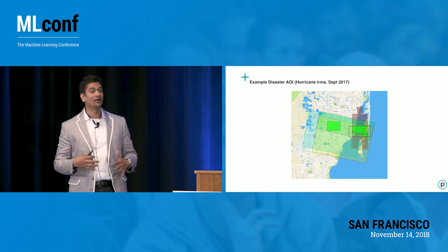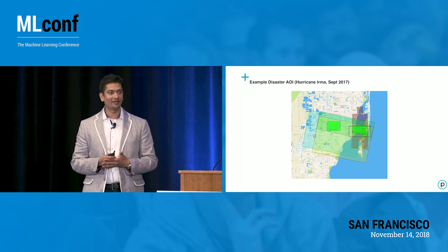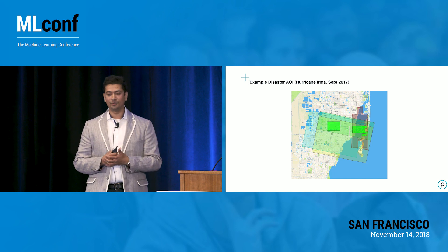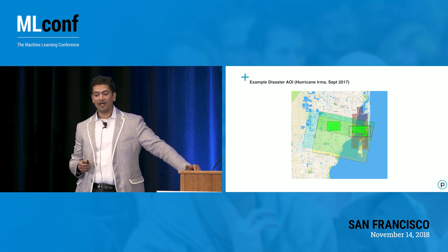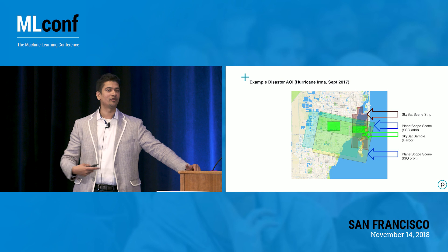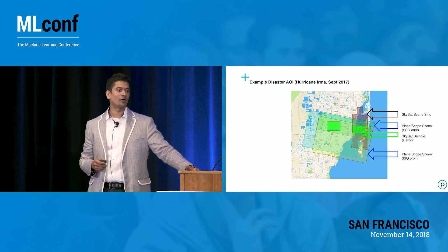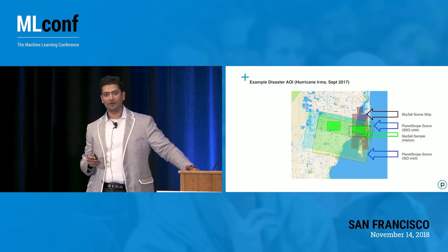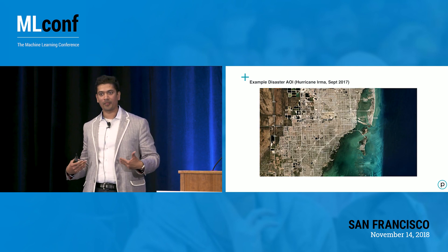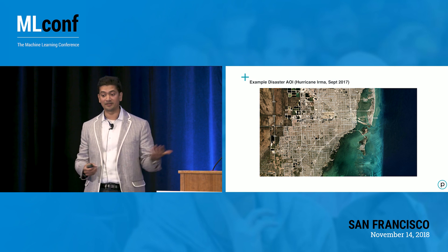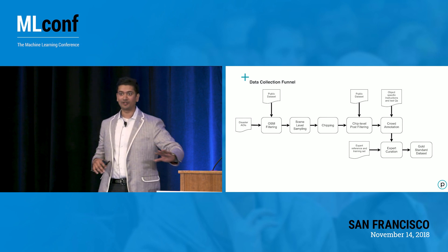Hurricane Irma was one of the biggest natural disasters that hit the United States and continental North America in September last year, and it hit Miami. Here is an example of our collects exactly during the days when those disasters hit — a collection of imagery from our different satellites. The SkySat constellation at close to 0.8 meter ground sampling distance and 3.7 meters from the PlanetScope imagery shows what the spatial extent actually looks like on the ground as a mosaic.